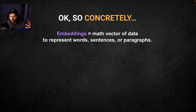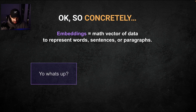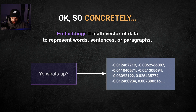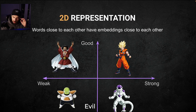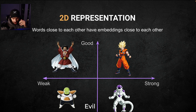But concretely, what are embeddings? Embeddings are basically math vectors of data that represent words, sentences, or paragraphs. So you have a sentence like 'yo what's up?' — an embedding of this would be a vector that is just a representation of this in numbers in a space with many dimensions. To help you visualize it, in two dimensions it would look like this. Two-dimensional vectors are a very gross oversimplification — you don't have enough information — but let's use it for the sake of trying to picture it.